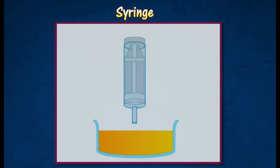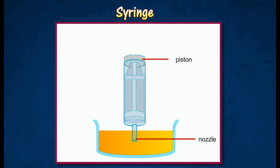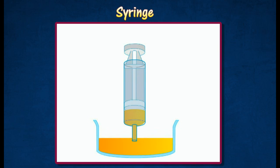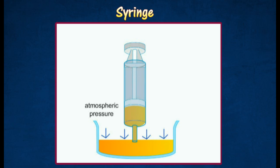A syringe consists of a tight-fitting piston which moves in a cylinder, with the nozzle at one end. When the nozzle is dipped into a liquid and the piston is pulled up, the pressure below is reduced. The higher atmospheric pressure acting on the surface of the liquid pushes the liquid into the cylinder.